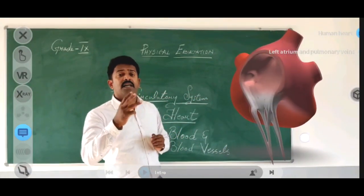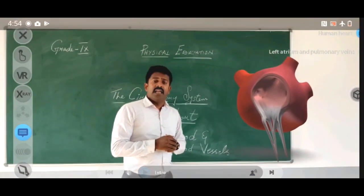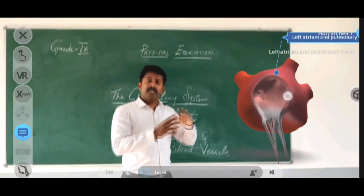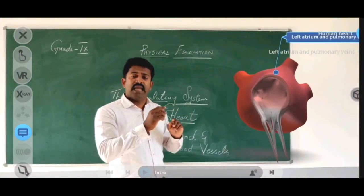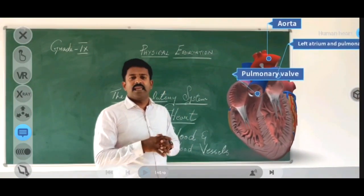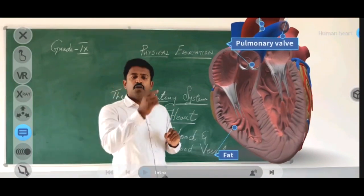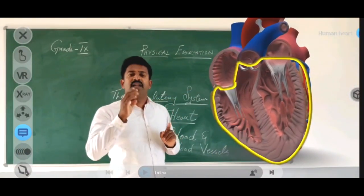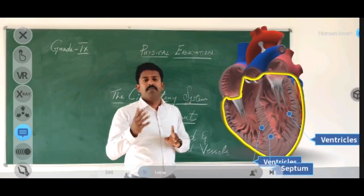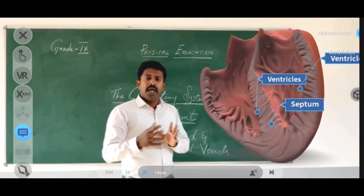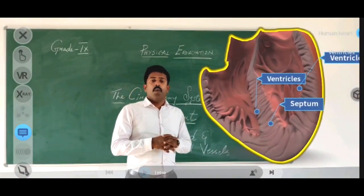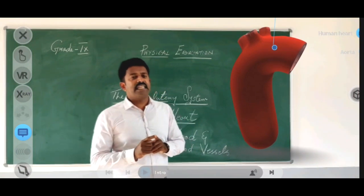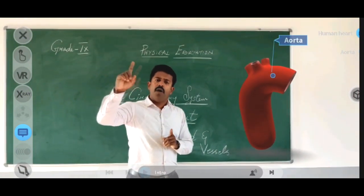The pure blood comes from the lungs to the third chamber, that is the left auricle. The purified blood fills the third chamber, and once it is filled, a valve opens automatically — the bicuspid valve. The oxygenated blood then goes to the last chamber, the left ventricle. From there, with the help of the aorta, the purified oxygenated blood is circulated to all parts of the body.